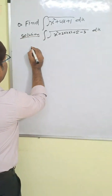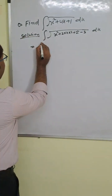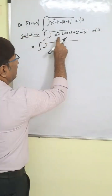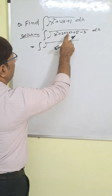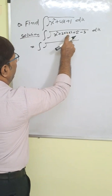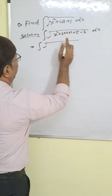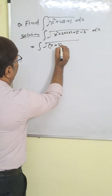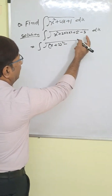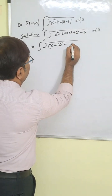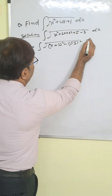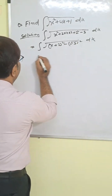So now we can write integration of x square plus 2 times x times 2 plus 2 square, which is x plus 2 whole square. And this gives us x plus 2 whole square minus 3, so we write root under (x+2)² minus (√3)² dx.